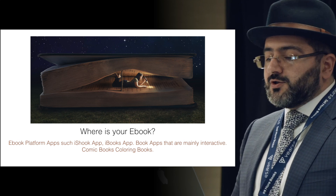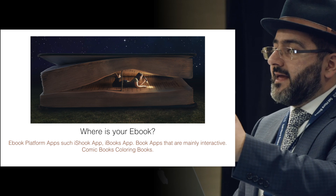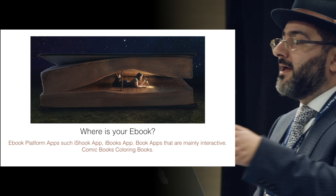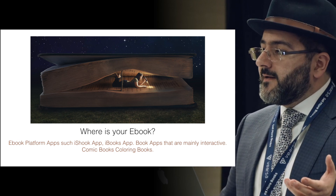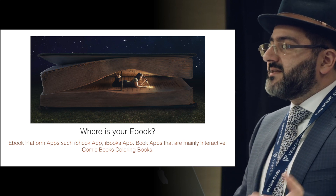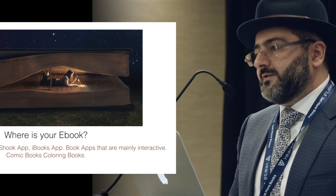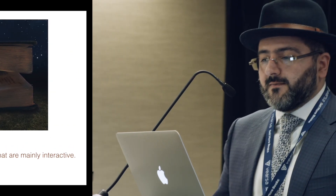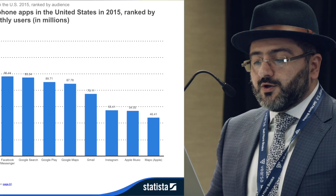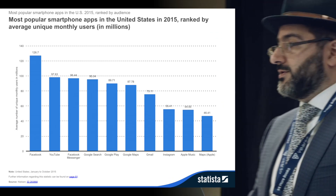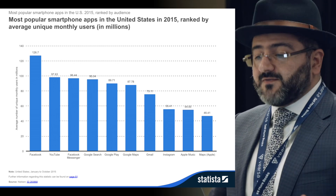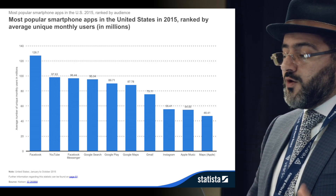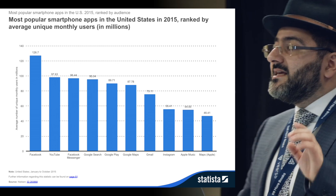So where is your e-book? It's essentially in platforms like iShook, iBooks, Overdrive, and Kobo Rakuten. But how do you get your book discovered? If it's difficult to get the app discovered, how is your actual e-book being discovered? The most popular smartphone apps in the United States ranked by average unique monthly users are Facebook, YouTube, Facebook Messenger, and Google Search. As an author, you want to be present in these three major aspects — Facebook, YouTube, and Google Search — which are key elements for success in sales.